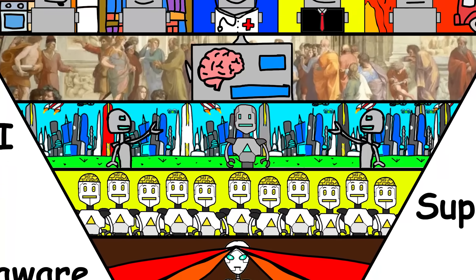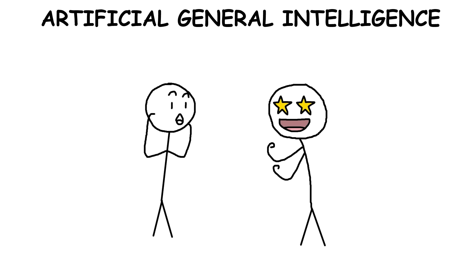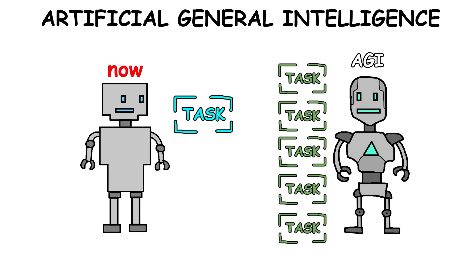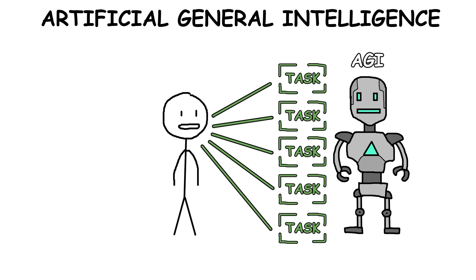Artificial General Intelligence. Artificial General Intelligence, or AGI, is one of the most exciting and talked about goals in AI today. Unlike the AI we have now, which is designed for specific tasks, AGI would be able to handle almost any task that a human can.